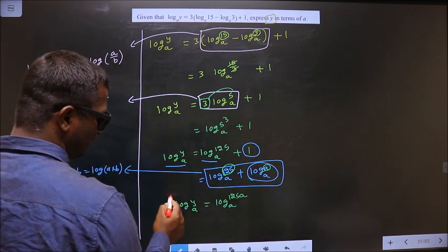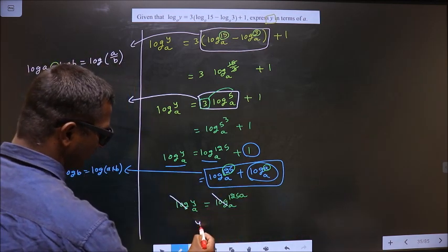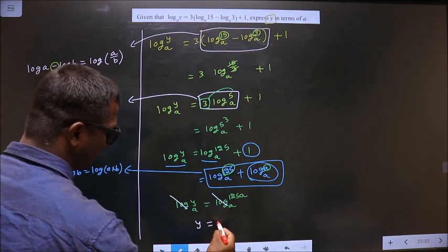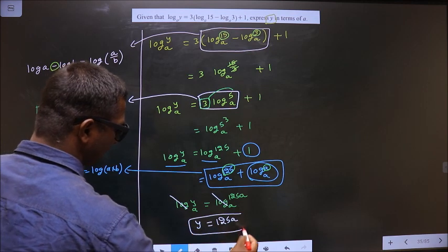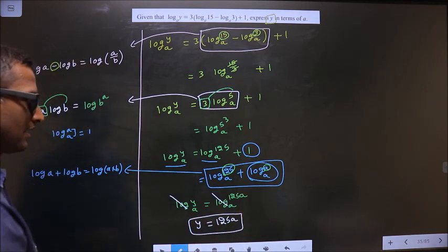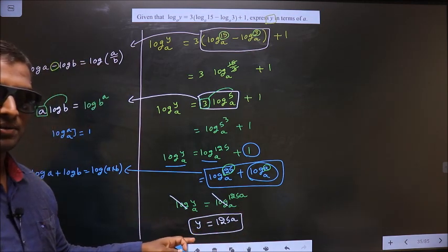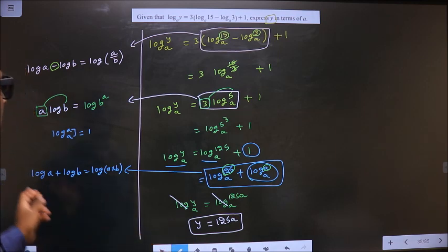Now log gets cancelled. Here you are left with y and here you are left with 125a. We made y the subject. This is our answer. Am I clear?